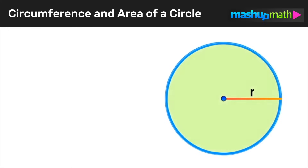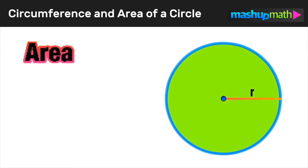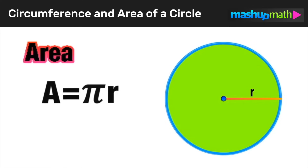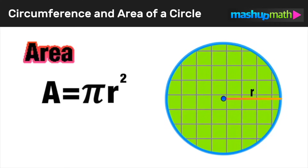The area of a circle represents how many square units it would take to fill in the entire inside of the circle. The formula for finding the area of a circle is a equals pi r squared.